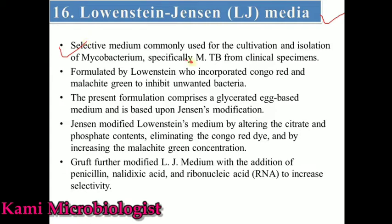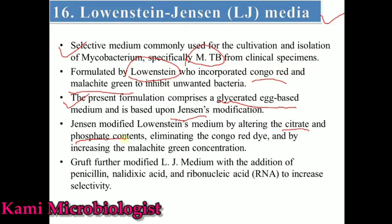This media was first discovered by a scientist named Löwenstein, who added special ingredients like Congo red and malachite green to inhibit unwanted bacteria. Then another scientist named Jensen added other important ingredients like glyceride egg-based medium, and later altered the medium by adding citrate as well as phosphate components, and removed the Congo red.